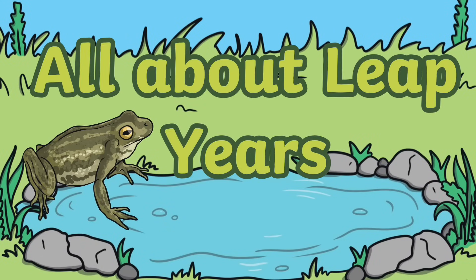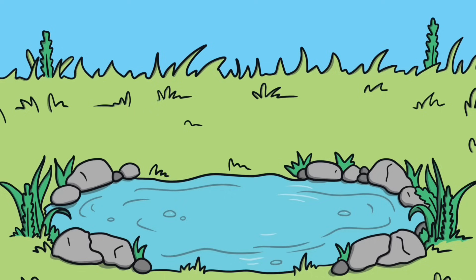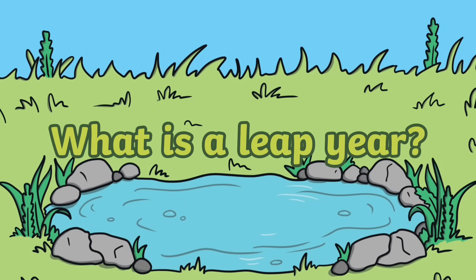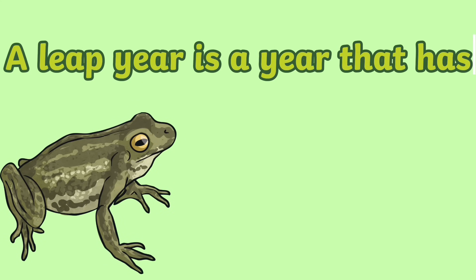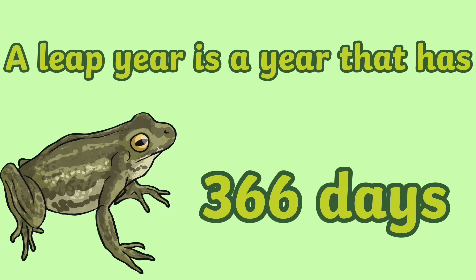All about leap years. What is a leap year? A leap year is a year that has 366 days.